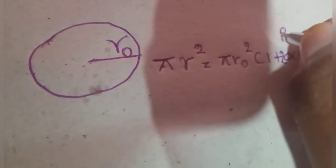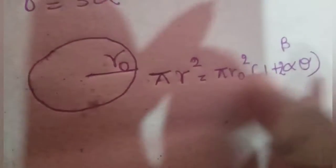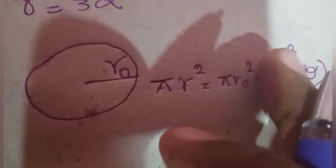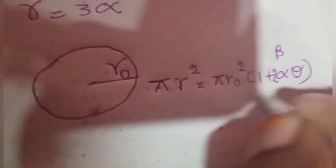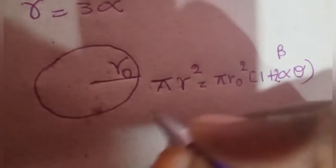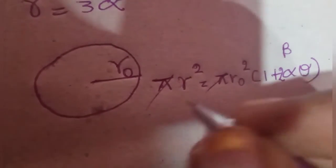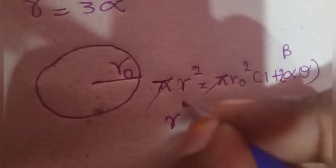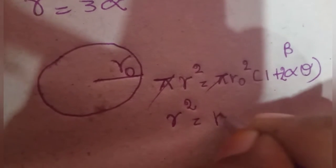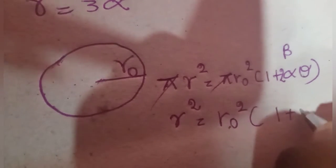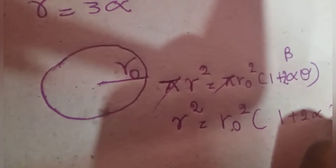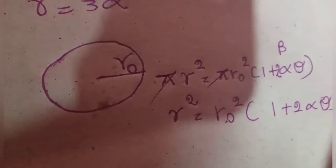Pi 2 over 1 over 2. I will write the beta. If you write the beta, then we will write the beta. The first one is R1. 1 plus 2 alpha theta.